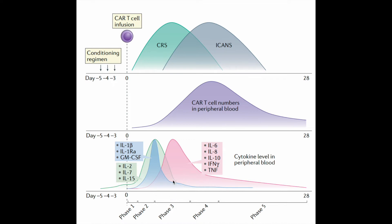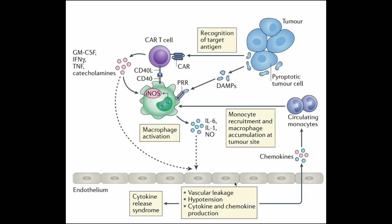This systemic inflammatory response initially results in what is known as the cytokine release syndrome — a syndrome we now closely relate with COVID-19 infections. Once there is an inflammatory response, this results in leaky capillaries or endothelial damage. This damaged endothelium affects the blood-brain barrier, resulting in phase four: the development of neurological symptoms. Finally, once the tumor cells are eliminated, the cytokine response decreases and there is a gradual decline in cytokine levels — that is phase five.